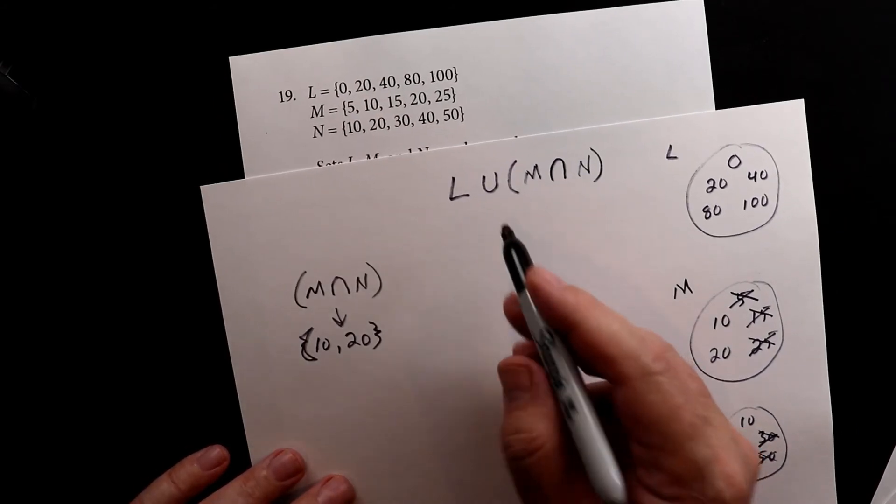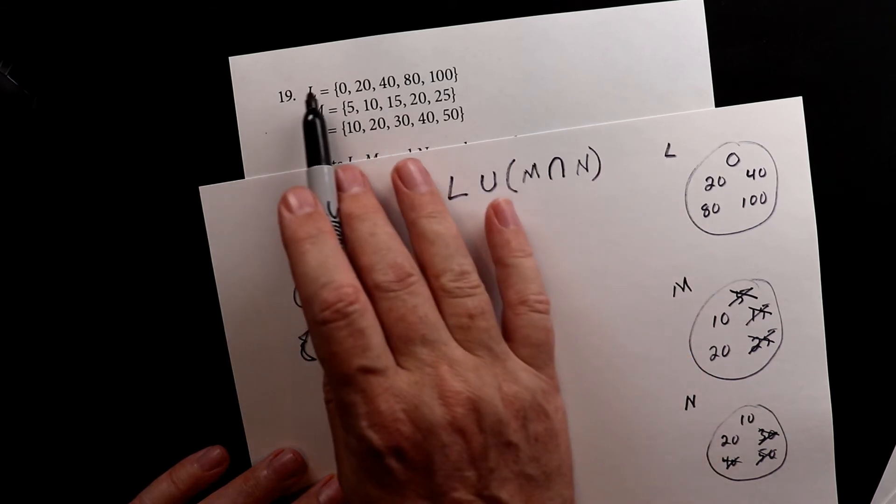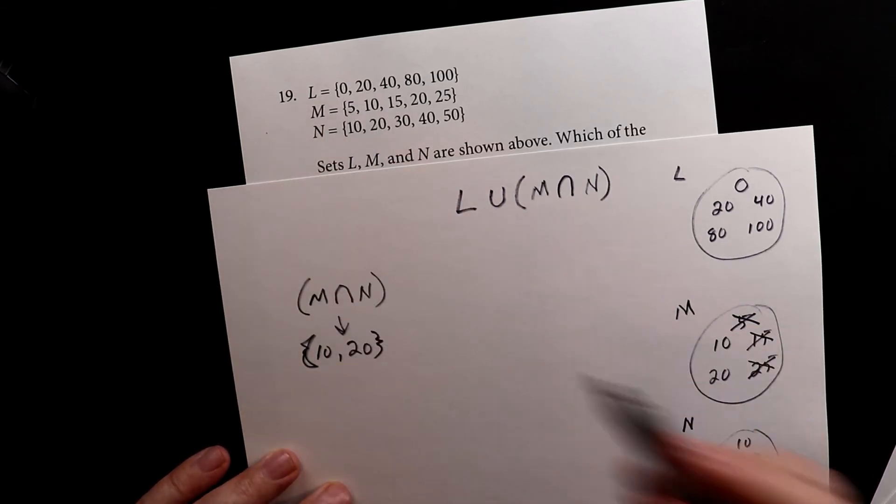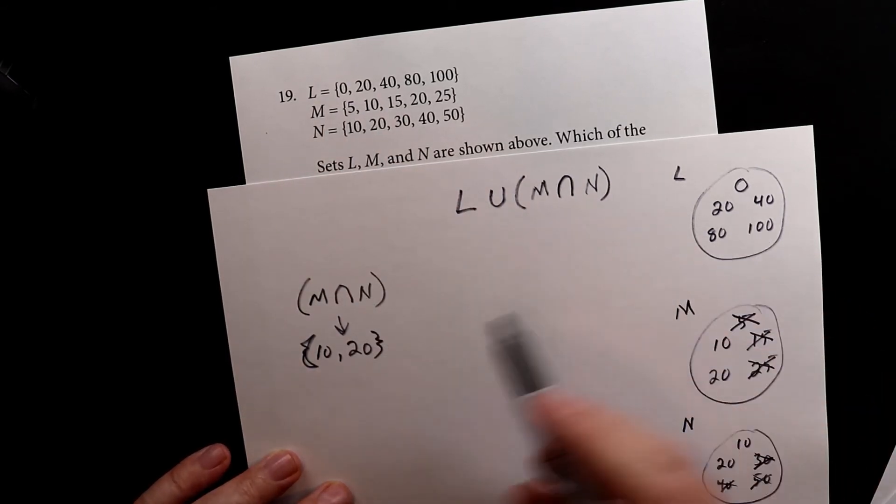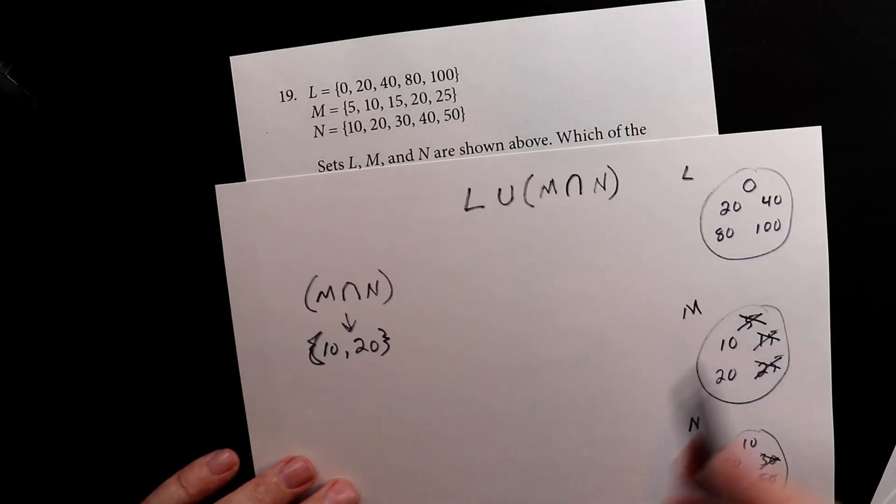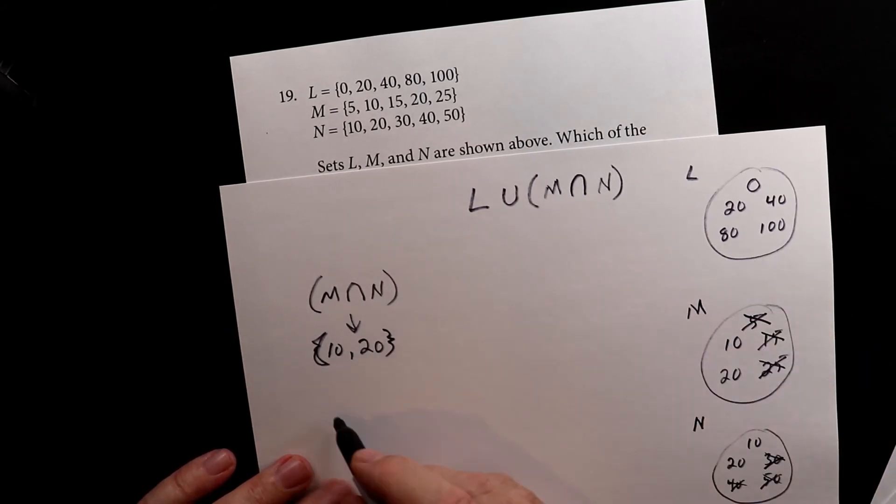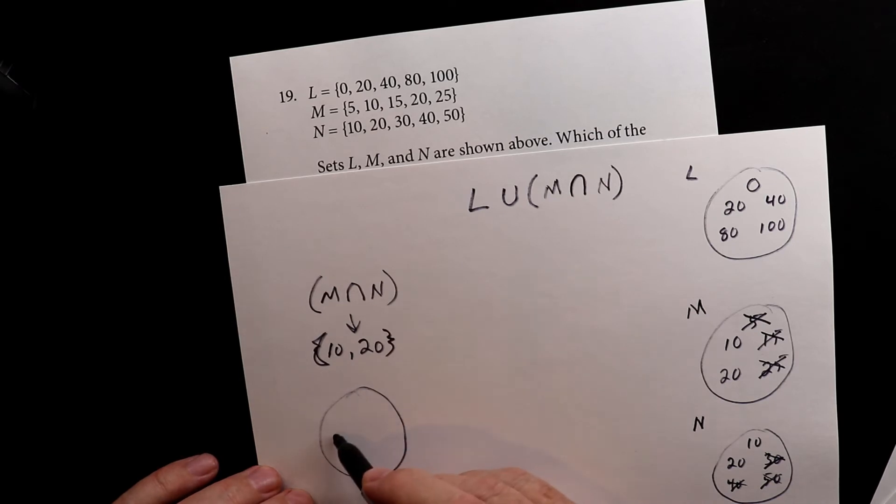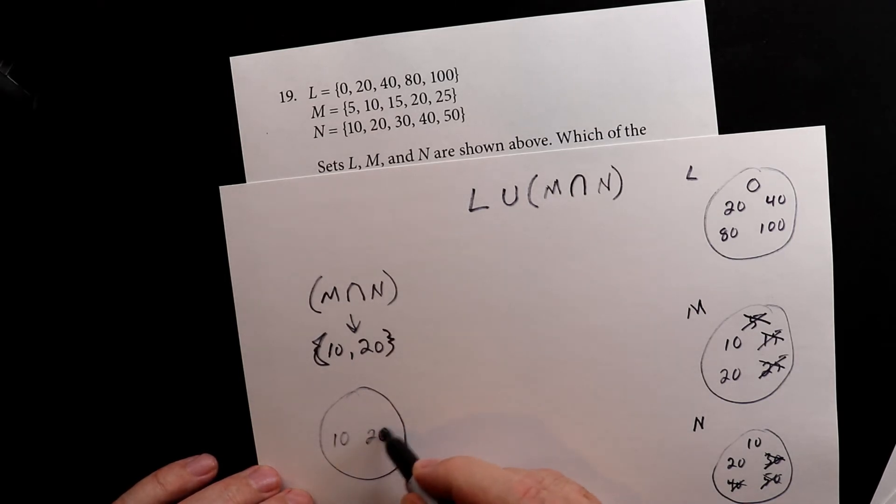So now what I want to do is I want to take the union of this set, so we have this set and we're adding it to here. So what I do is I look at this set over here. We have just 10 and 20,